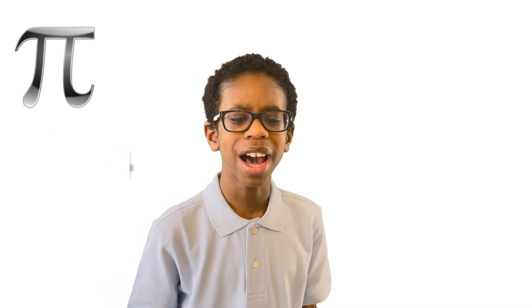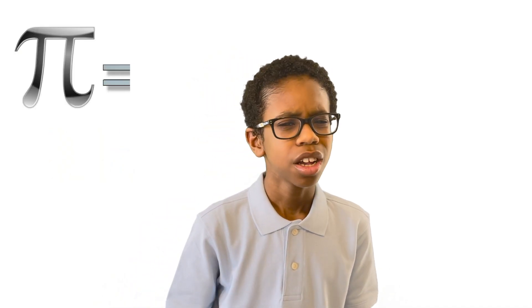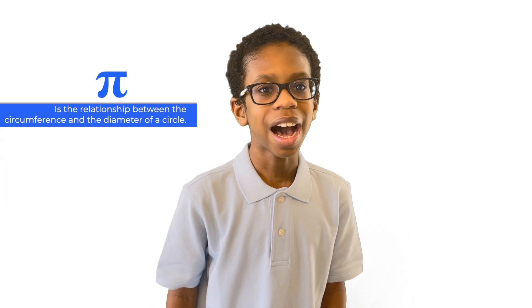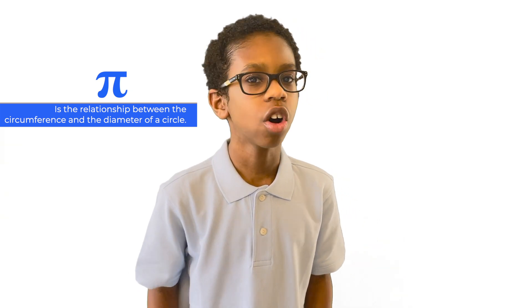Pi is very important in mathematics. 3.14... The symbol π is actually the Greek letter P. So what is pi? Pi is a relationship between the circumference and the diameter of a circle. Pi is an irrational number that goes on forever to infinity and does not repeat.